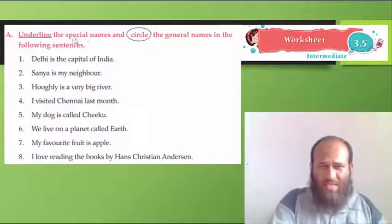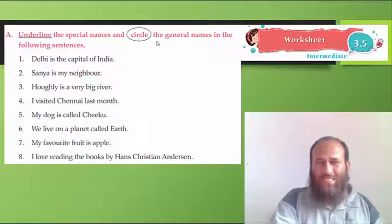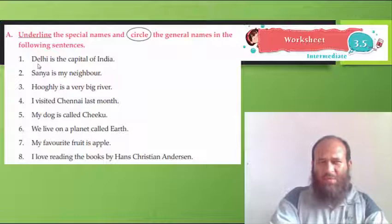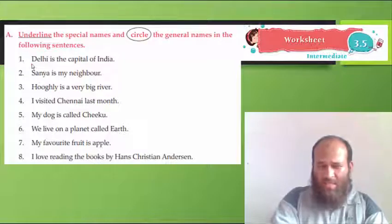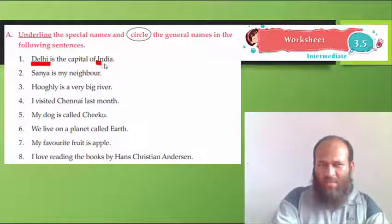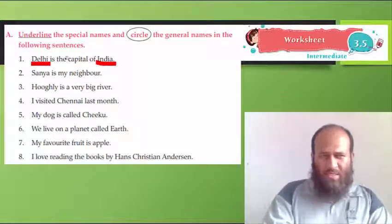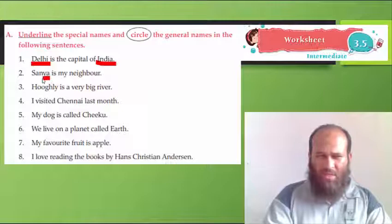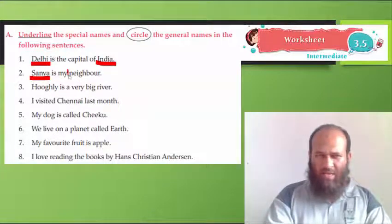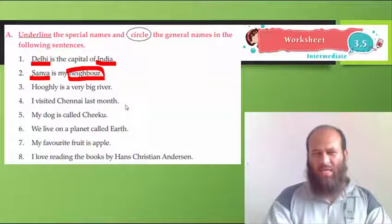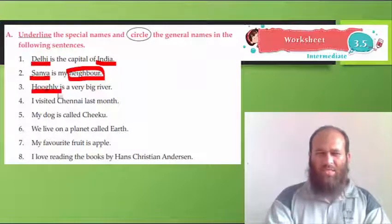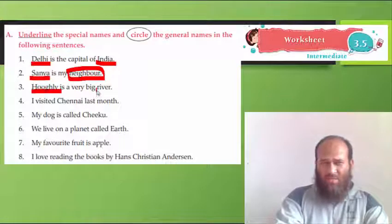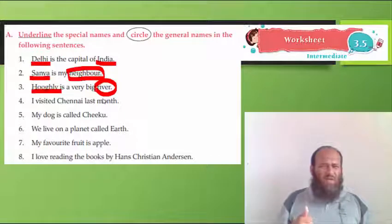Now, once again, we have to underline special names and circle general names. Delhi is the capital of India. So, how many special names are here? One is Delhi, name of a city. India, name of our country. Sanya is my neighbor. So, Sanya is a special name. And I have many neighbors, so they are general names. Hooghly is a big river. I will underline Hooghly because it is a special name. And river because there are many rivers. So, I will circle it.